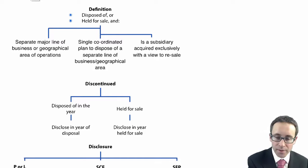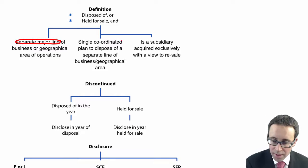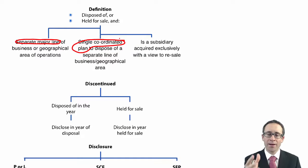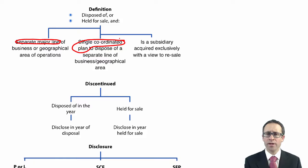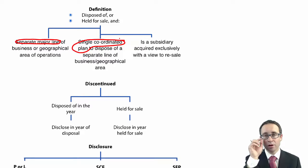In order for it to become a discontinued operation, it needs to be a separate major line of business or geographical area, and it also needs to be part of a single coordinated plan — one big plan to dispose of that separate major line of business, not sold off in stages. Alternatively, it could still be a discontinued operation if you buy a subsidiary with the intention of selling it in the near future — it's held for sale and will be disclosed separately. However, the focus tends to be on the separate major line of business as part of a single coordinated plan.